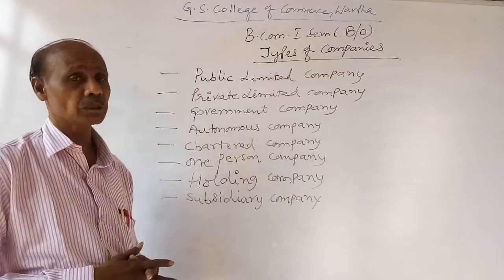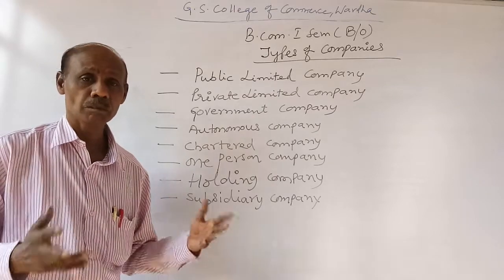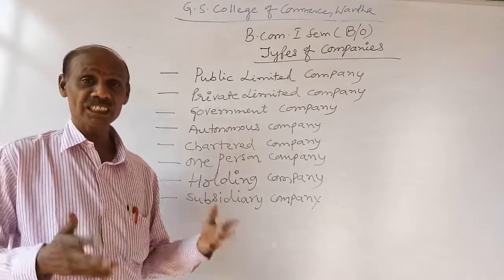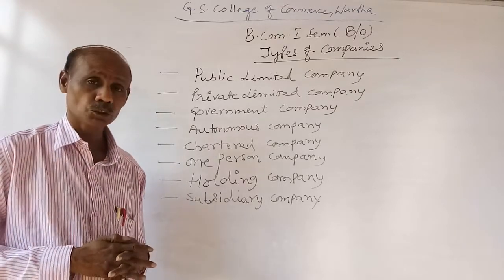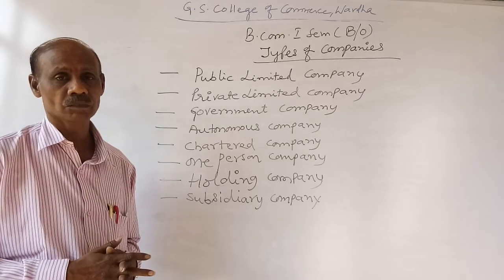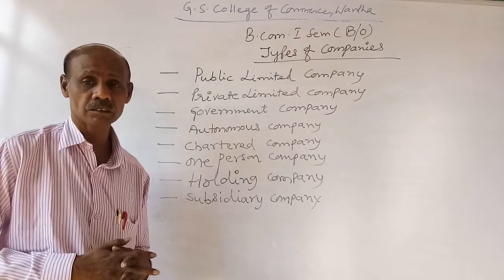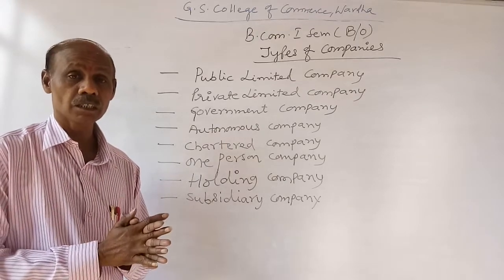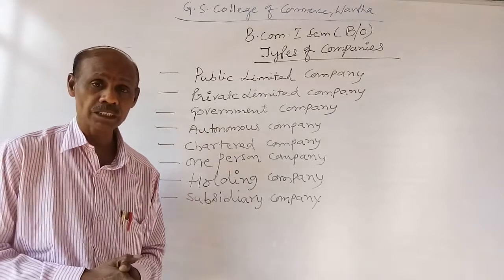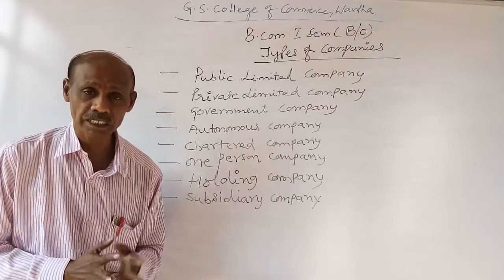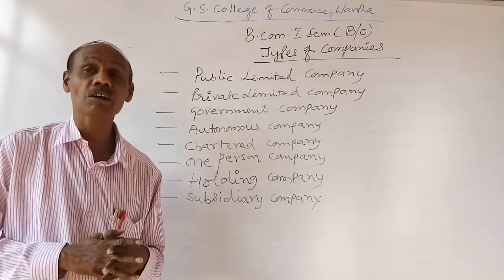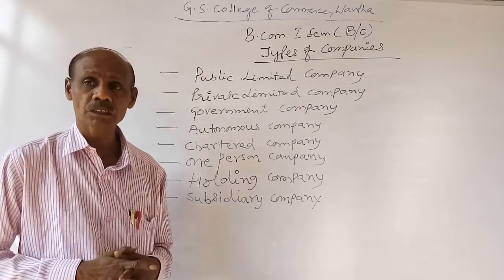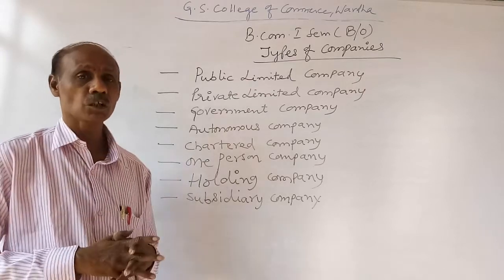In the case of a public limited company, the minimum number of members is 7 and the maximum is unlimited. There is a requirement for the public limited company to indicate that it is a limited company. Since the company subscribes its capital through the issue of a prospectus to the public, it is by default accountable to the public of the country. So a public limited company is one where the share capital is procured from the common public.